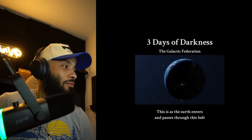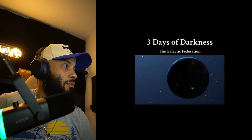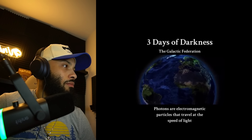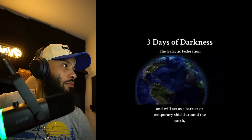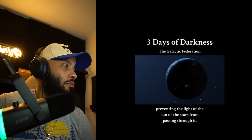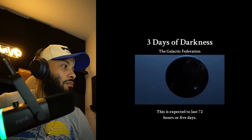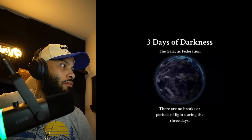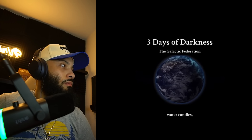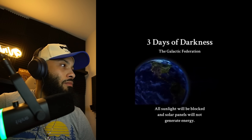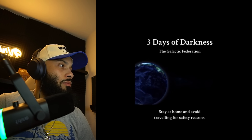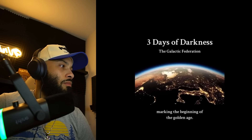Three days of darkness will occur when the Earth passes through the photon belt. As the Earth enters this belt there will be no sunlight nor moonlight on the Earth's surface. Photons are electromagnetic particles that travel at the speed of light and will act as a temporary shield preventing light from passing through. This is expected to last 72 hours or five days with no breaks or periods of light. Recommendations: stock up on food, water, and candles. Solar panels will not generate energy. Stay home and avoid traveling. The sunlight will return, marking the beginning of the golden age.